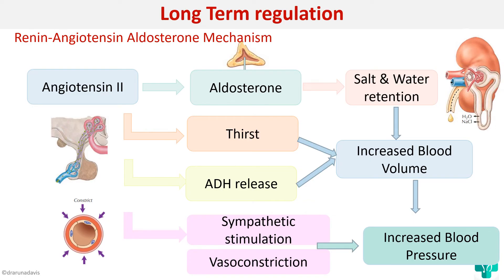This is how the renin-angiotensin-aldosterone mechanism regulates blood pressure. If there is an increase in BP, the juxtaglomerular apparatus will not produce renin, so angiotensin 2 will not be formed. But when there is a drop in BP, renin is produced, converting angiotensinogen to angiotensin 1 and then to angiotensin 2, which produces all these effects.